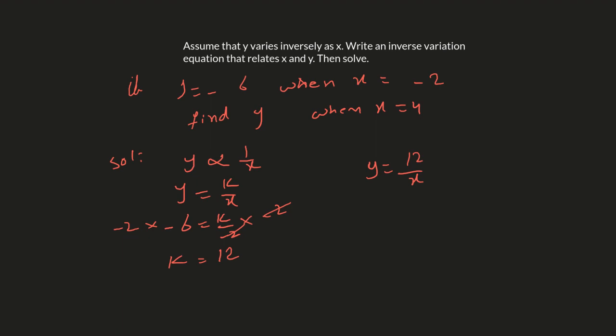The equation will be y equals 12 over x. We have to find y when x equals 4, so plug in x equals 4: y equals 12 over 4, so y equals 3.